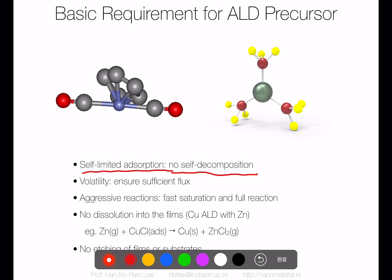If the temperature is very high, the precursor itself thermally decomposes, and the ligand already detached from the precursor can become very reactive. But within the ALD process window and at the correct ALD temperature, all precursors should be very stable and adsorb on the surface through a self-saturated reaction. This is a pretty important thing.